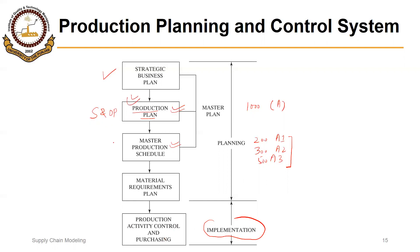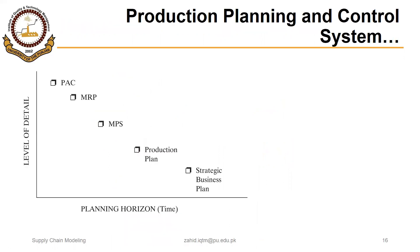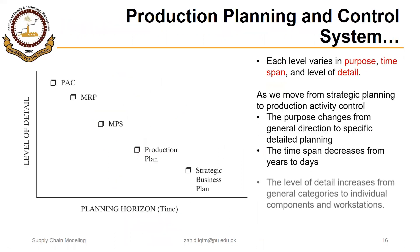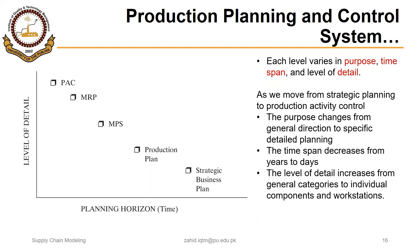In this lecture we are focusing on developing the production plan, and in the following lectures we will discuss master production scheduling, material requirements planning, production activity control, and purchasing. Looking at this hierarchy of the production planning and control system another way: the strategic business plan has a long planning horizon but a lower level of detail.